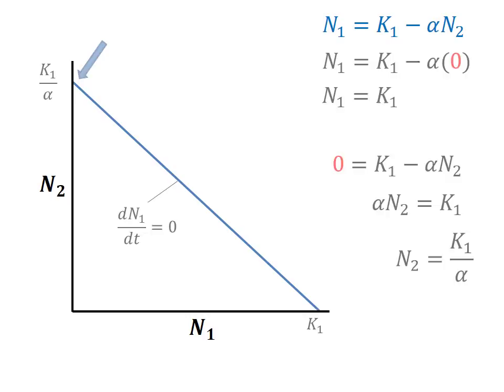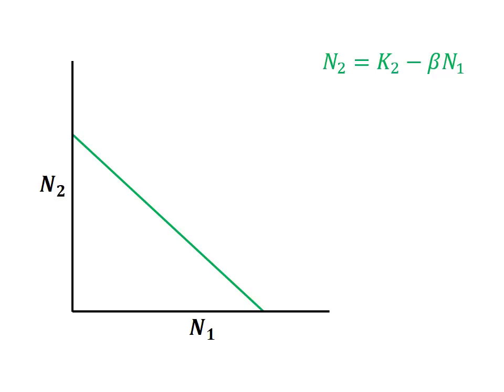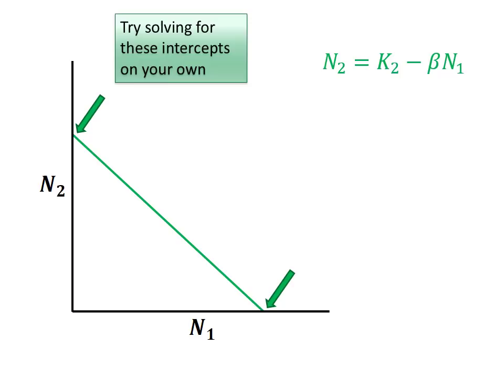We can complete the exact same analysis with the species 2 isocline, only now the species of concern is on the vertical axis. Try to solve for these intercepts on your own, and resume the video when you've completed this.